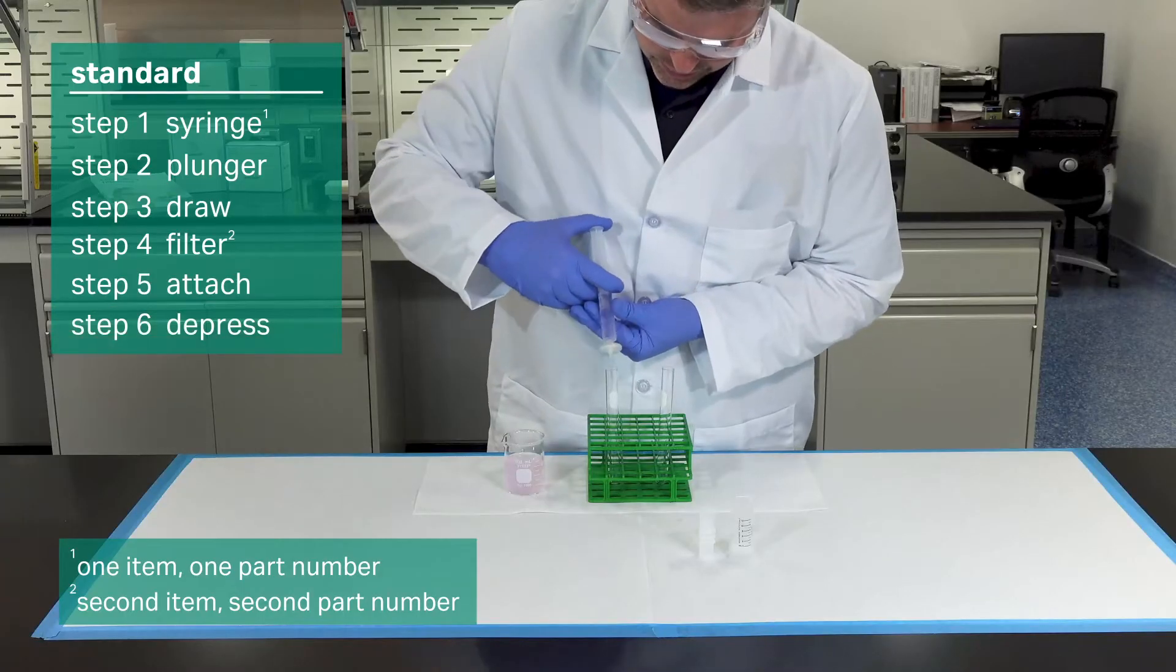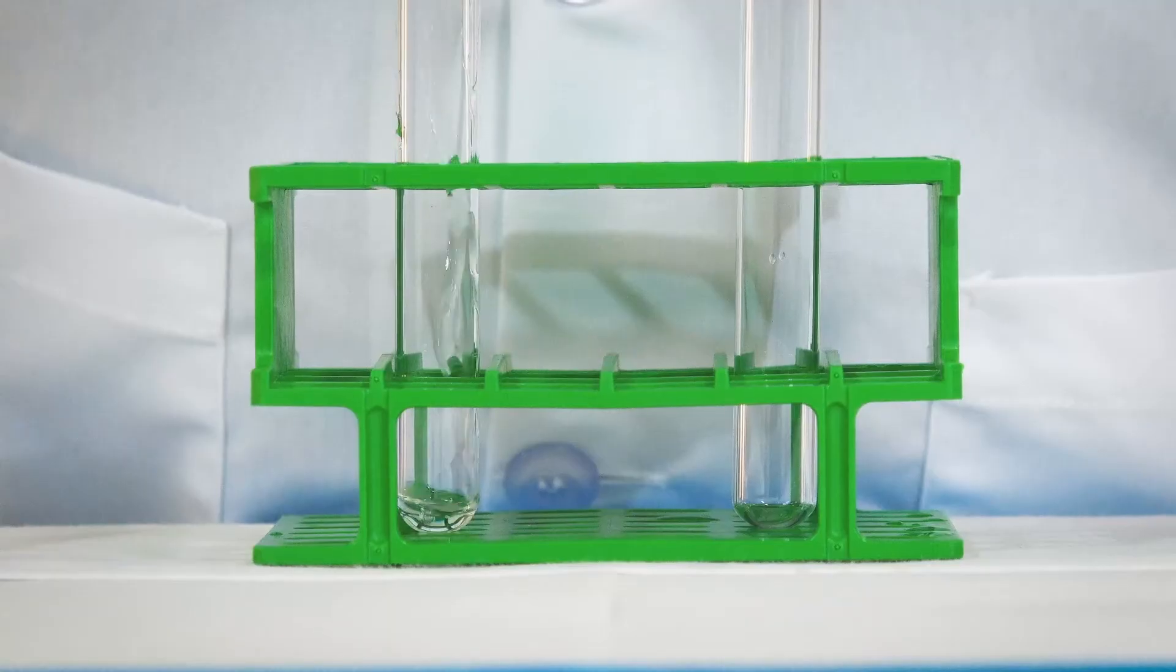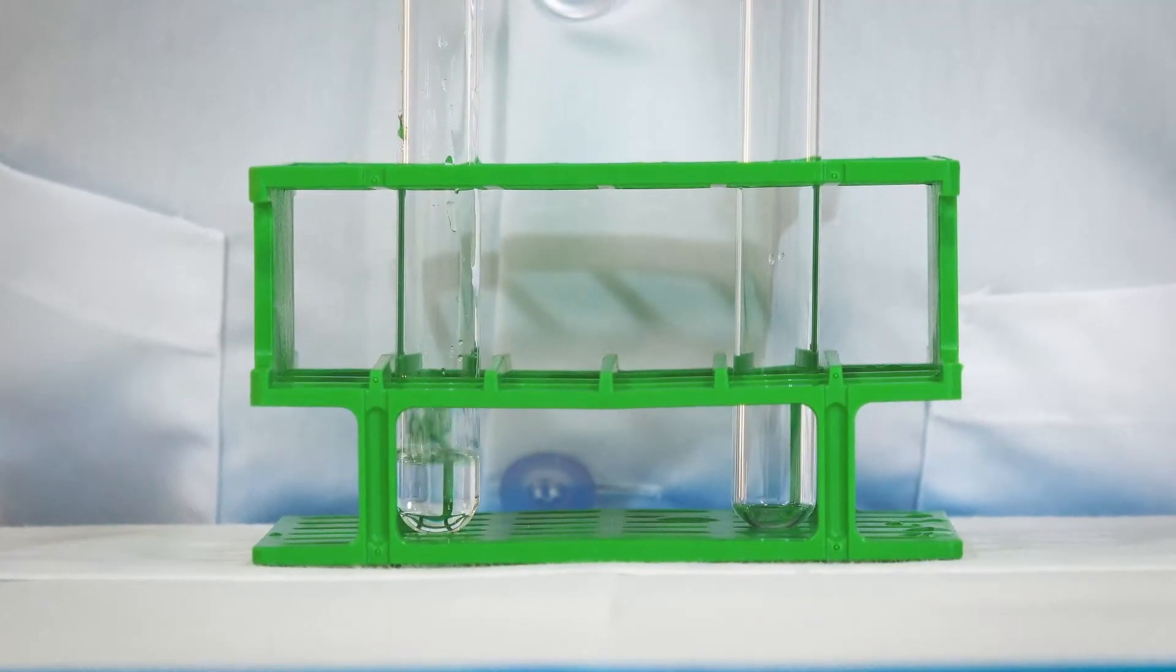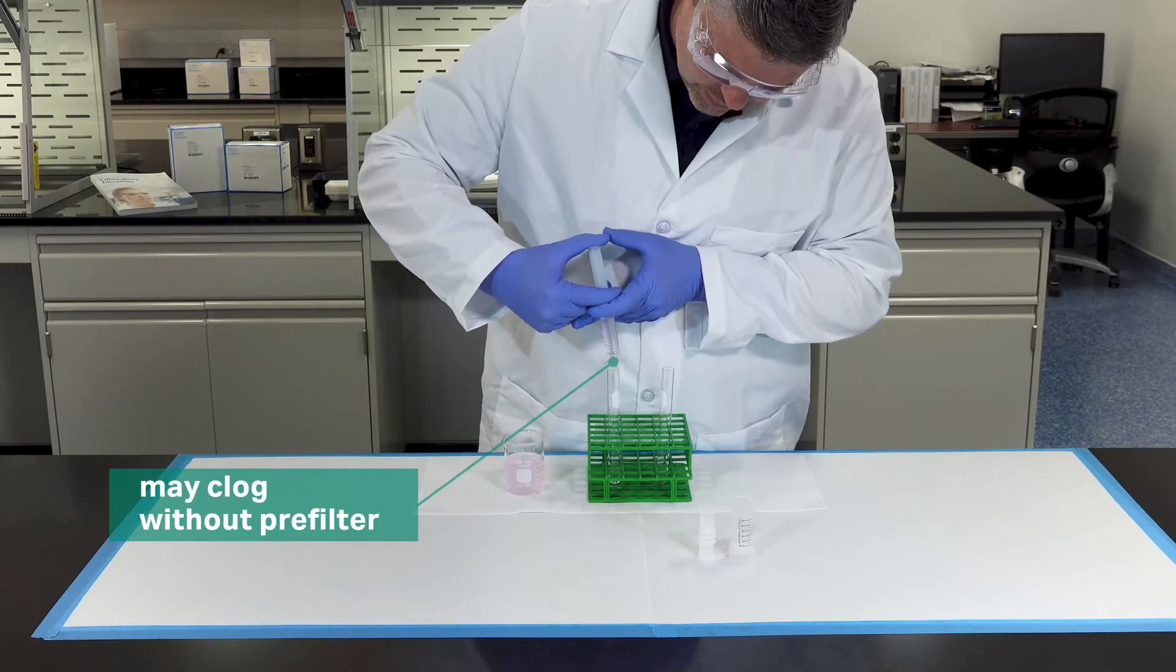Now depress your plunger, filtering your sample. Without a pre-filter, the standard syringe filter may clog as it does here.